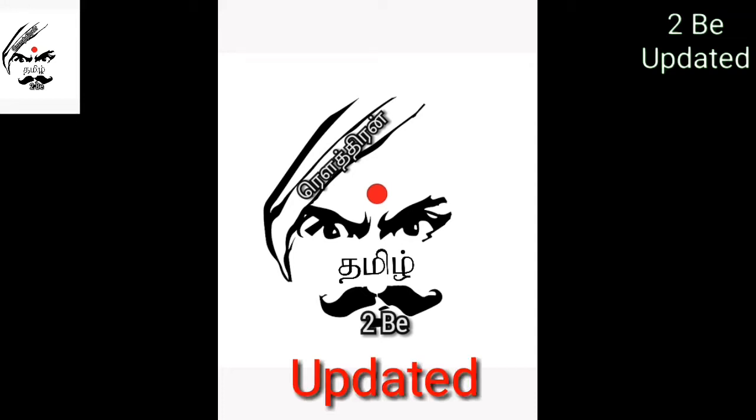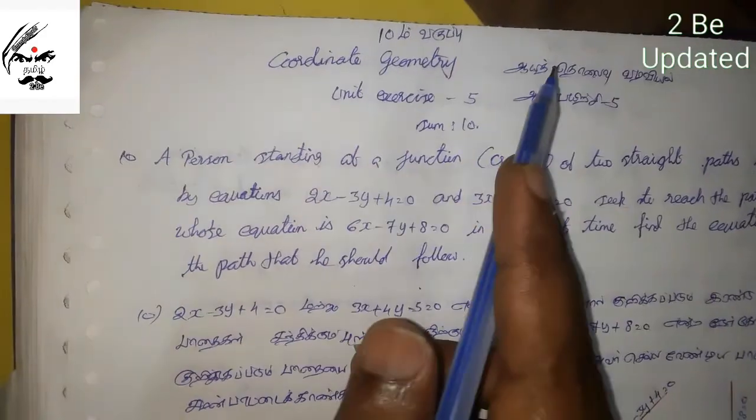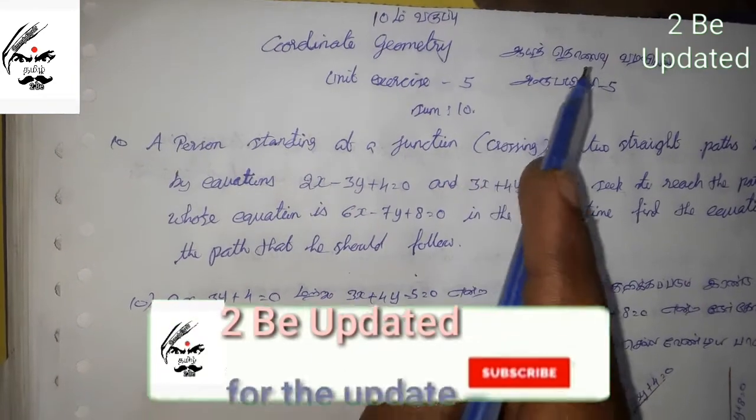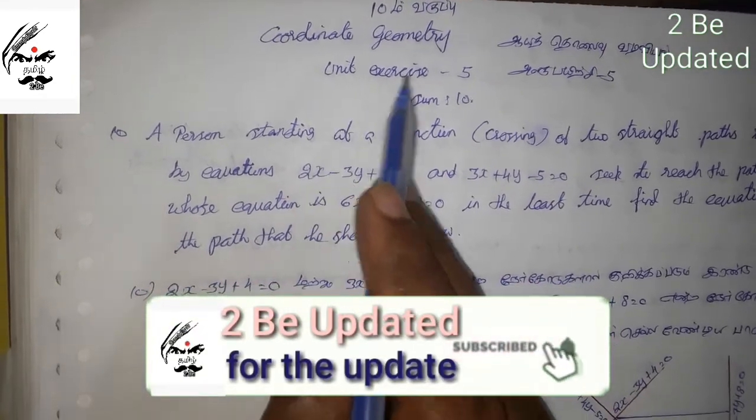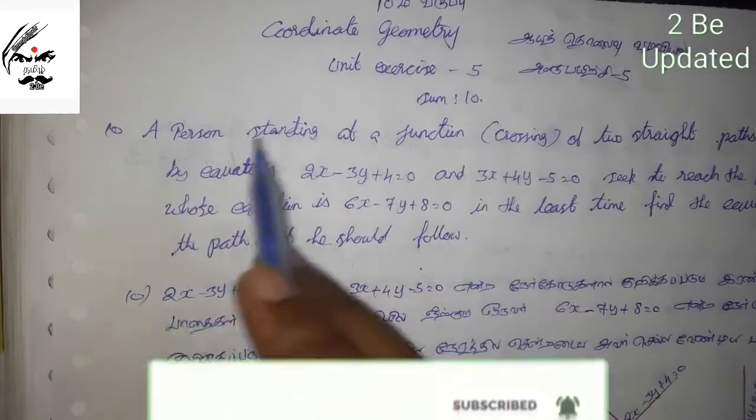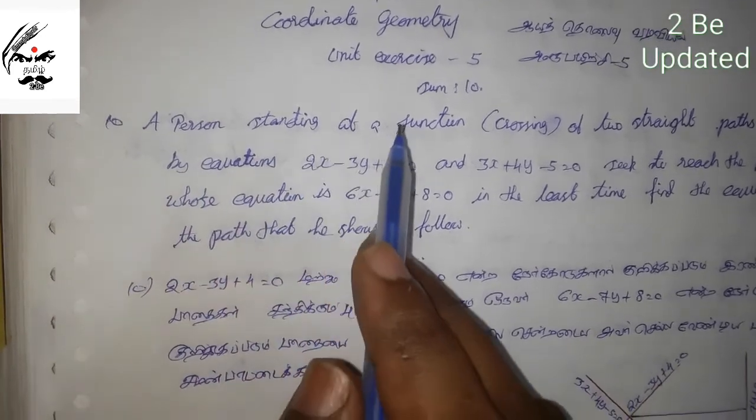Welcome. I'm going to cover a coordinate geometry problem. This is a problem about a person standing at a junction.